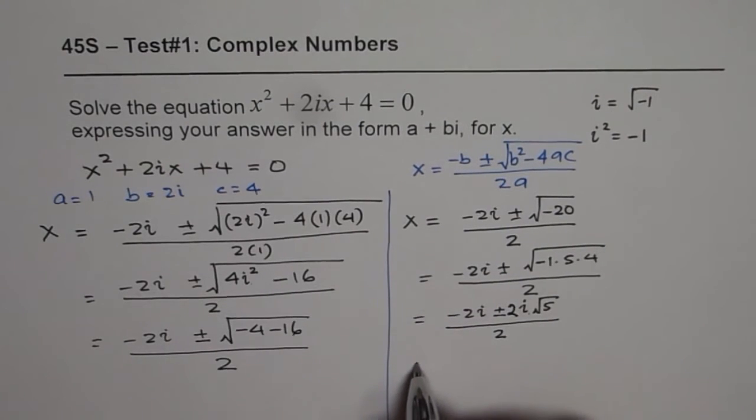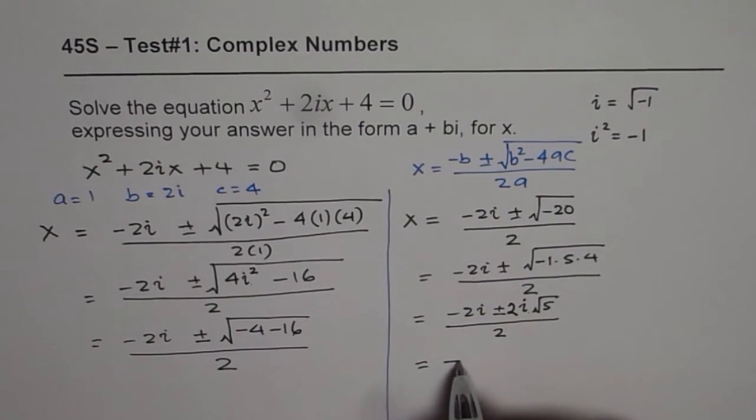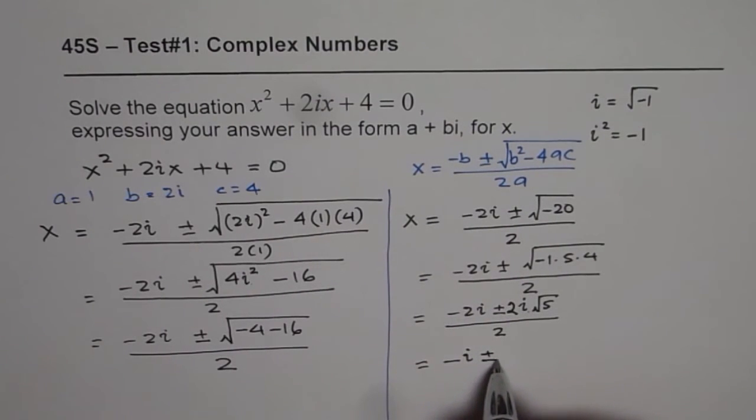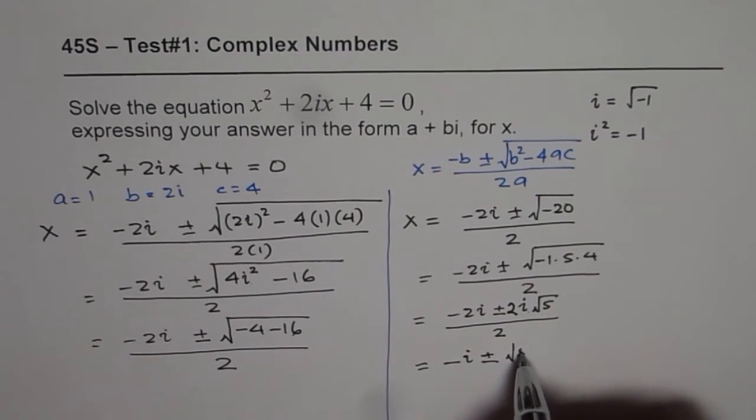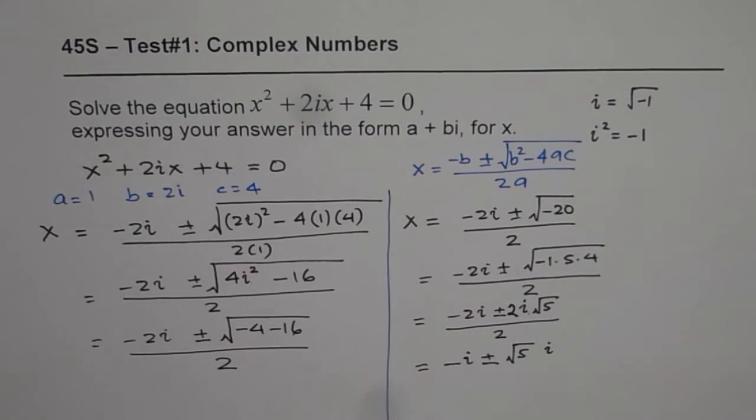Over 2. Now we can divide by 2 and finally write down our answer. So we get minus i plus or minus, 2 and 2 cancel, square root 5 i. So that is what we get after simplifying it.